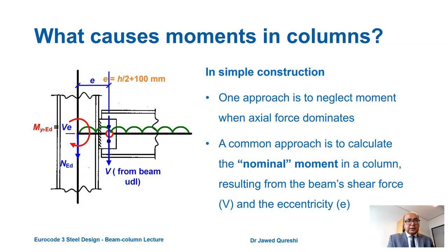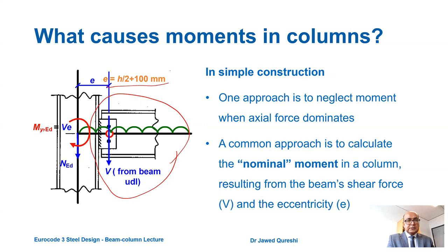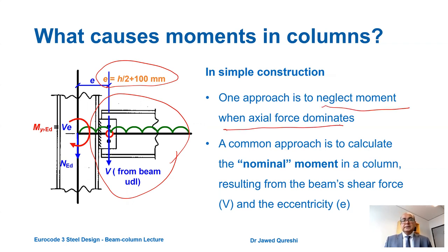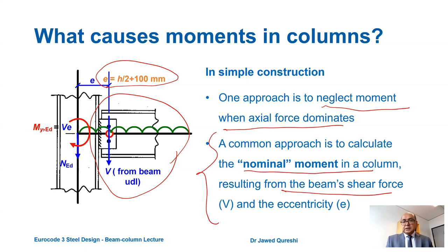This is the eccentricity: when you attach a beam to the column, it has a bolt line and an eccentricity. If beam reactions are unequal on both sides of the column, it will induce a nominal moment. One approach is to neglect this moment when axial force dominates. In most buildings the joints are simple — columns mainly carry axial force — but general practice is to take the nominal moment resulting from the beam's shear force multiplied by the eccentricity.